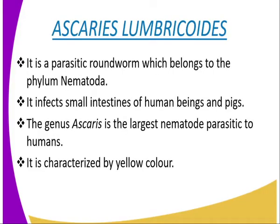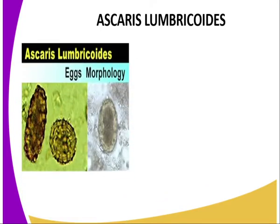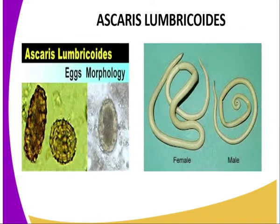We are going to have the first parasitic worm as Ascaris lumbricoides, whereby Ascaris lumbricoides is a parasitic roundworm which belongs to the phylum Nematoda. Ascaris lumbricoides is widespread in distribution and infects the small intestines of pigs and human beings. It may also occur in other organs of the body. We can have a diagrammatic presentation of the Ascaris lumbricoides.